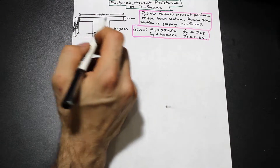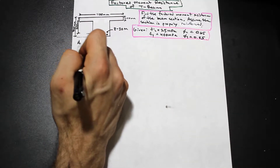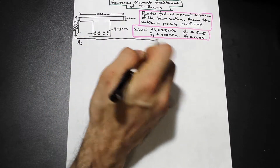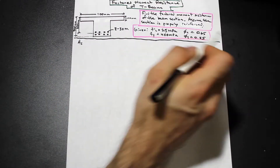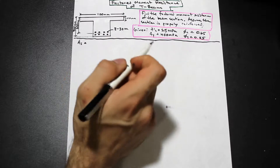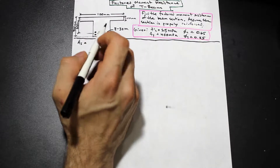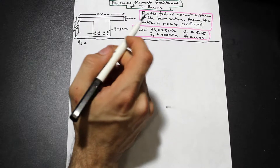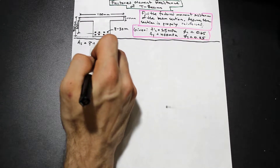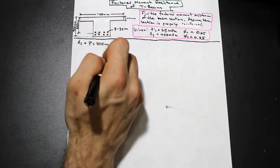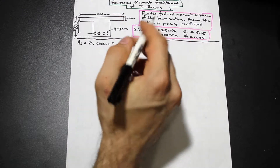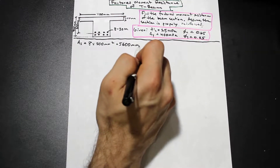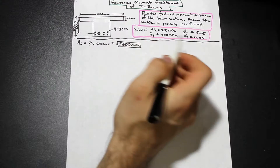We start with the area of steel, As. We are given eight 30M bars; a 30M bar has an area of 700 mm², and we have eight of them. That gives us As = 5600 mm².